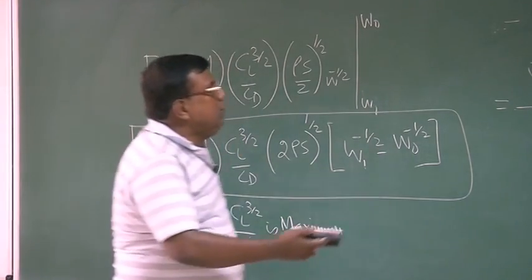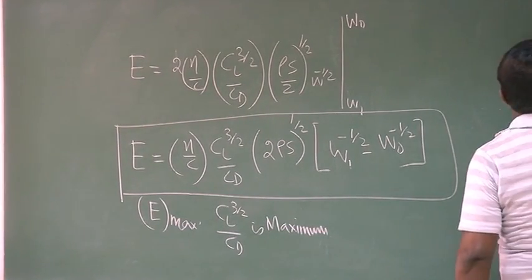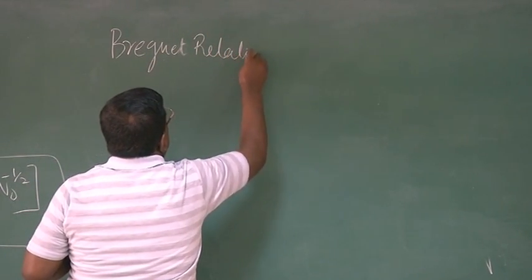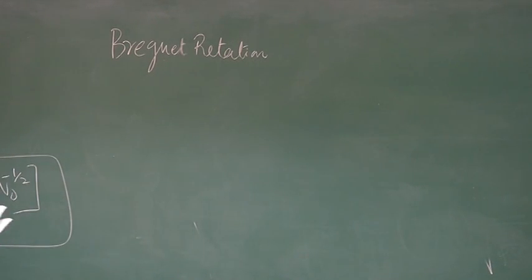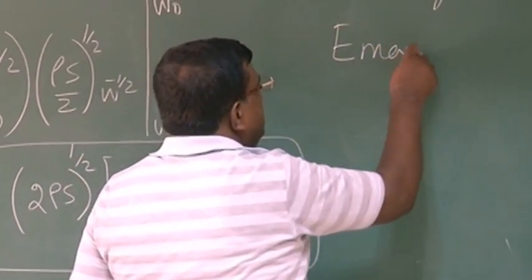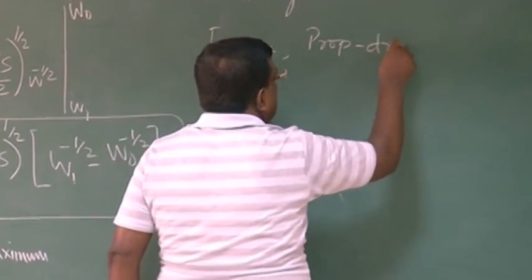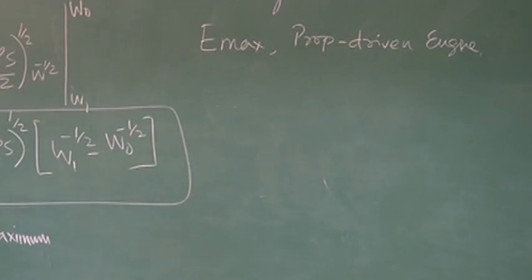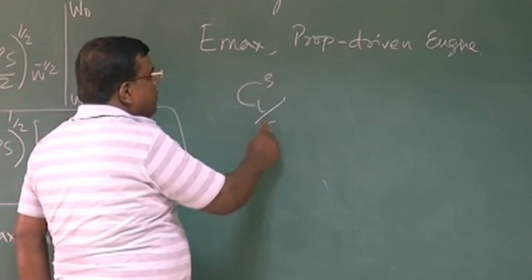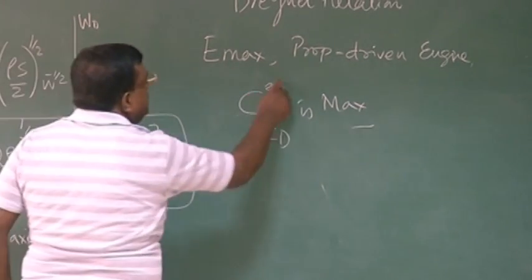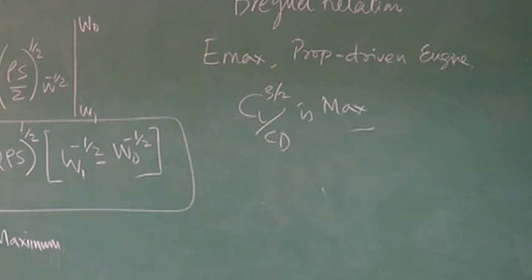Please understand, it is very important result, which is also popularly known as Breguet relationship relation. It is very handy in the design process of an aircraft. What we are seeing here, that E is maximum for propeller driven engine, provided you fly the airplane such that CL^(3/2) by CD is maximum. Are you familiar with this term?